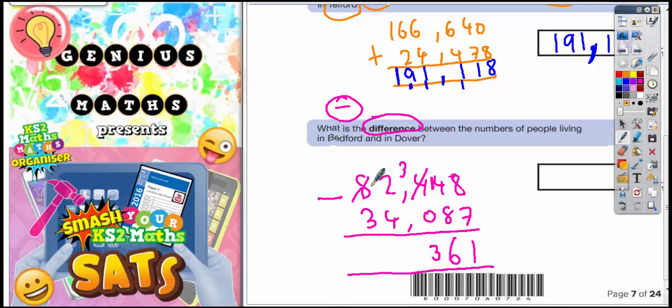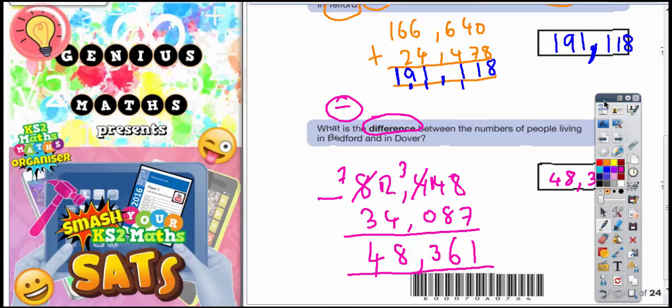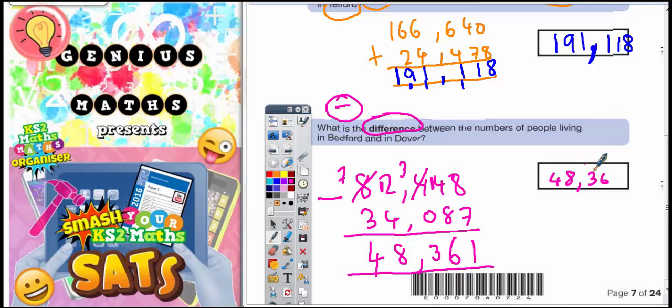2 take away 4 you can't do. So borrow one. Borrow one from the 8 makes 7, and the one I've borrowed makes that into 12. 12 take away 4 is 8, and 7 take away 3 is 4. Remember your comma. Final answer: the difference between the number of people in Bedford and Dover is 48,361.